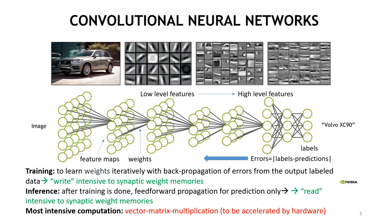Let's use a convolutional neural network as an example to illustrate the basics. The neural network has many layers. The earlier layers extract low-level features, done by convolution between the feature map and filters with weights. As we go deeper, the network can extract high-level features. Eventually, the fully-connected layer at the very end can associate those features with labels. There are two operation phases. The first is training — an iterative process using back propagation to update the weights from the errors. After training is done, we can do inference only, which involves feed-forward propagation for prediction.